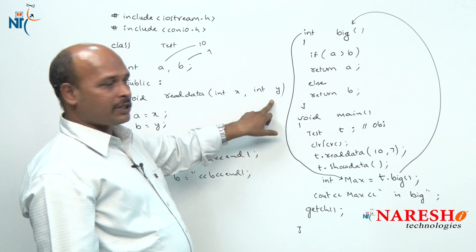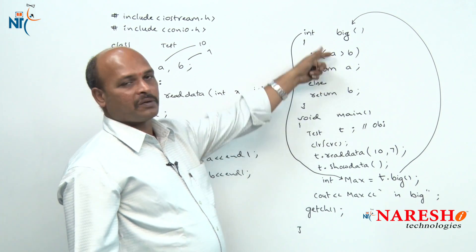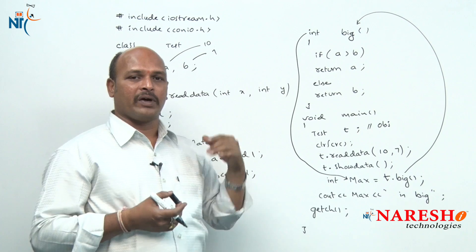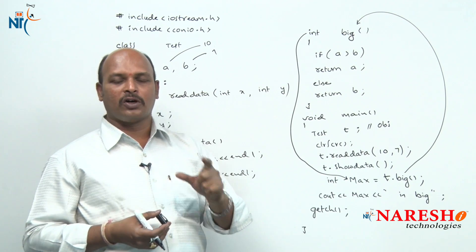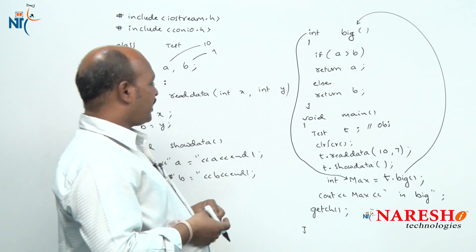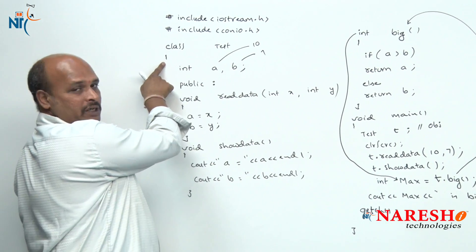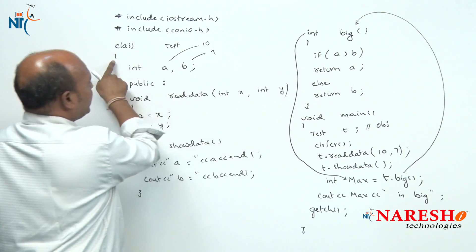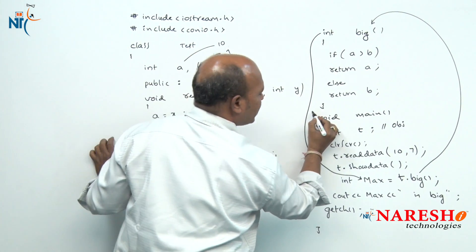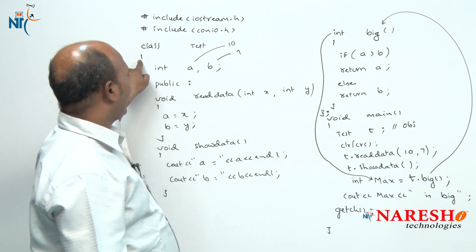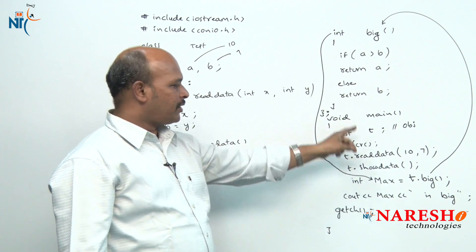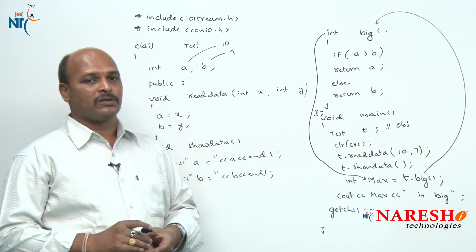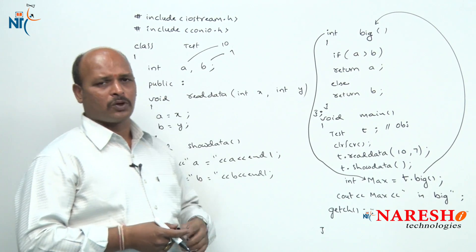This is how we can pass parameters to a function and return values from a function. This example demonstrates member functions with arguments and with return values. Inside the class we have data members declared and member functions defined, so the class is also closed here. This is the main function, and those are the member functions with arguments and return values.